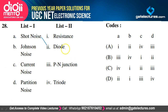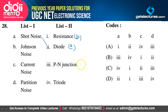Matching noise types: shot noise occurs in the diode — A matched to 2. Johnson noise occurs in the resistance — B matched to 1. Current noise occurs in the P-N junction diode — C matched to 3. Partition noise occurs in the triode — D matched to 4. Option D satisfies the explanation and is the correct option.